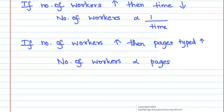Here, workers can be represented as w, time can be represented as t and pages can be represented as p.